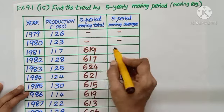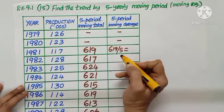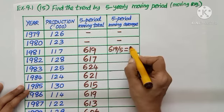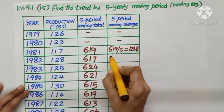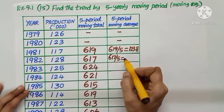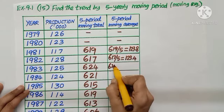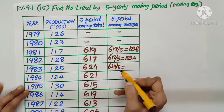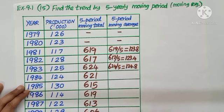619 divide by 5, what is your answer? 123.8. 617 divide by 5: 123.4. 624 divide by 5, your answer 124.8. Proceed like this way, find out the values.